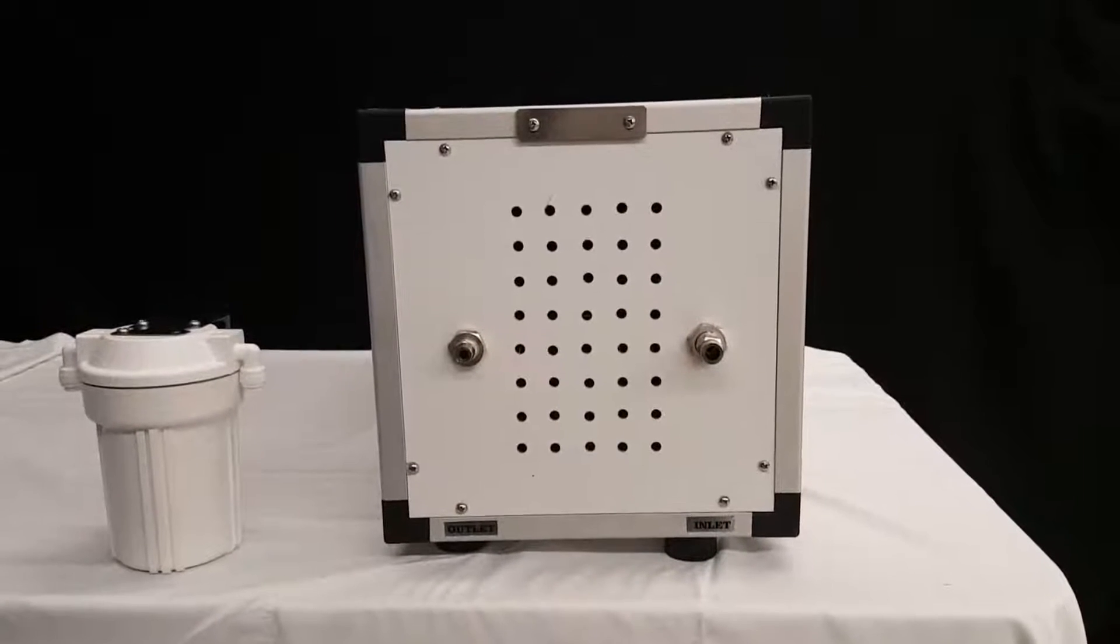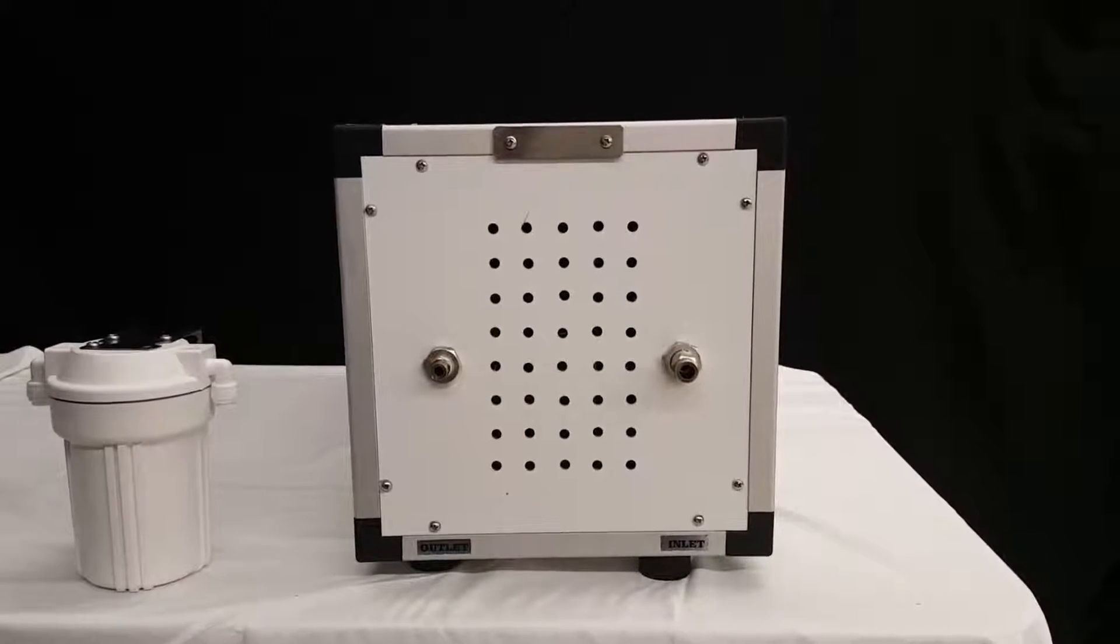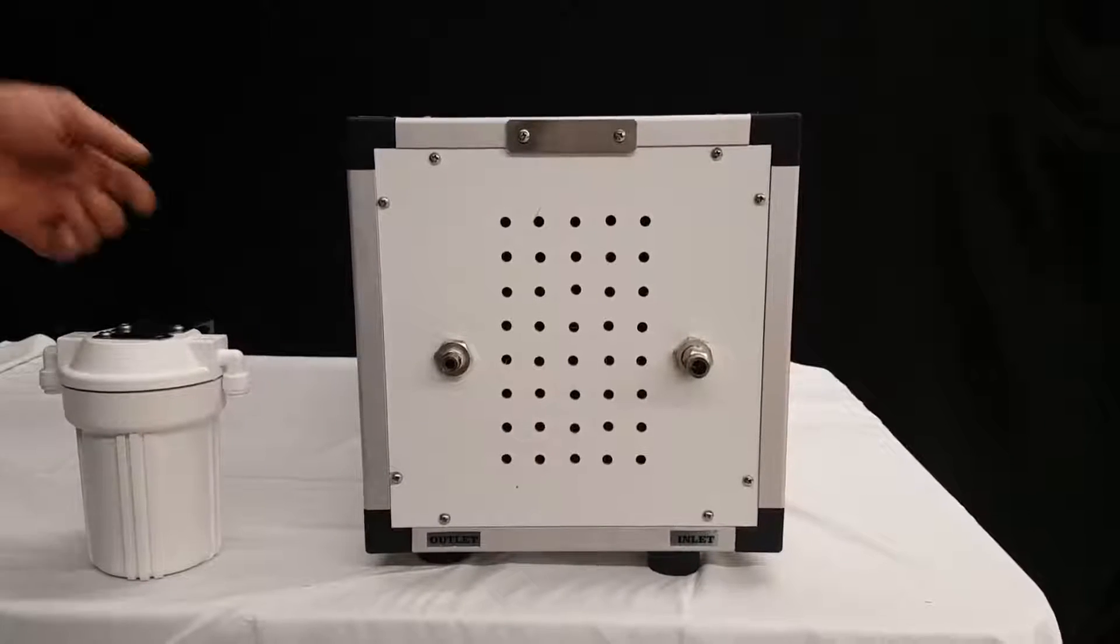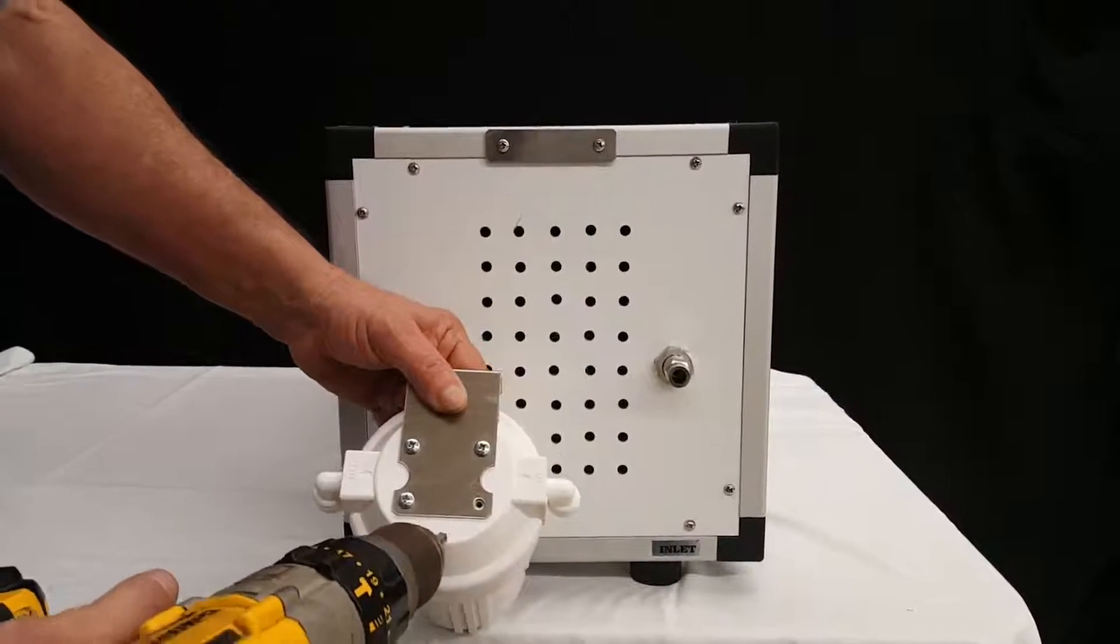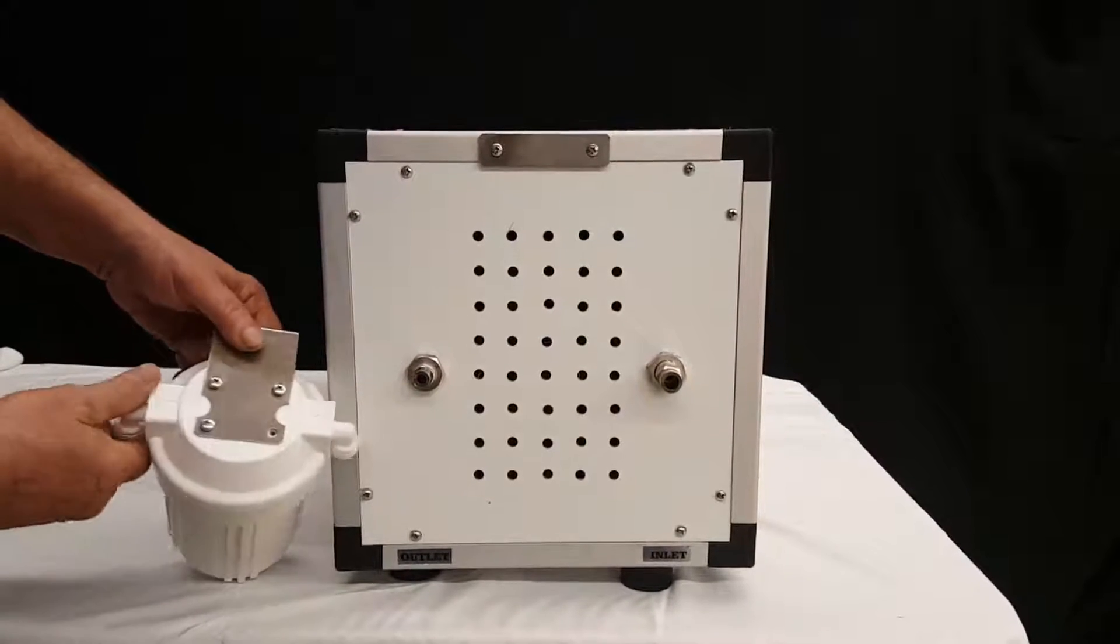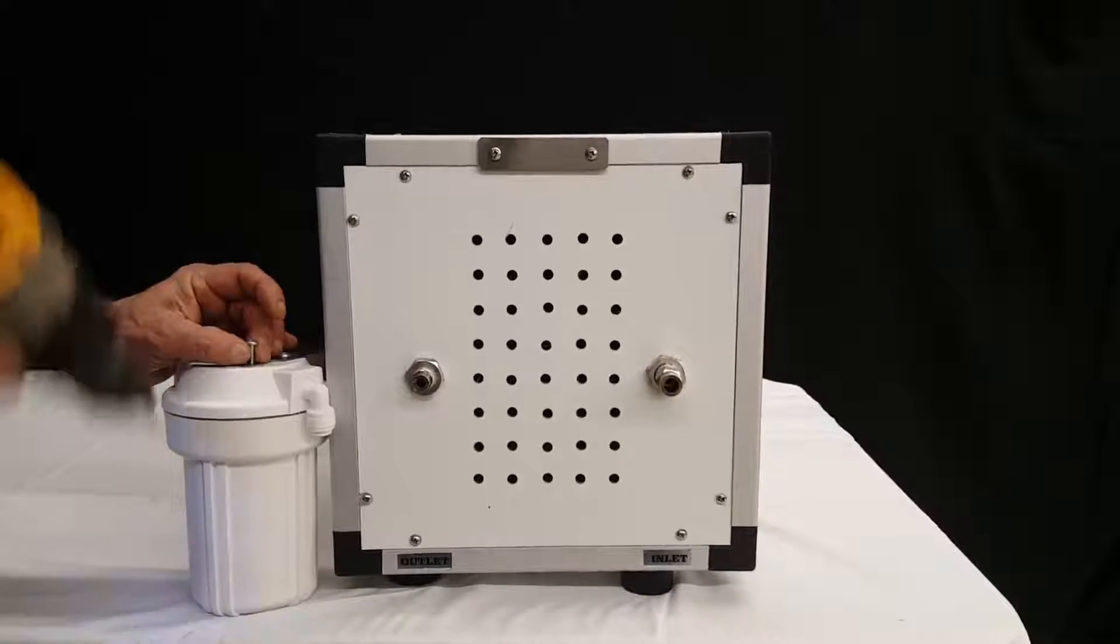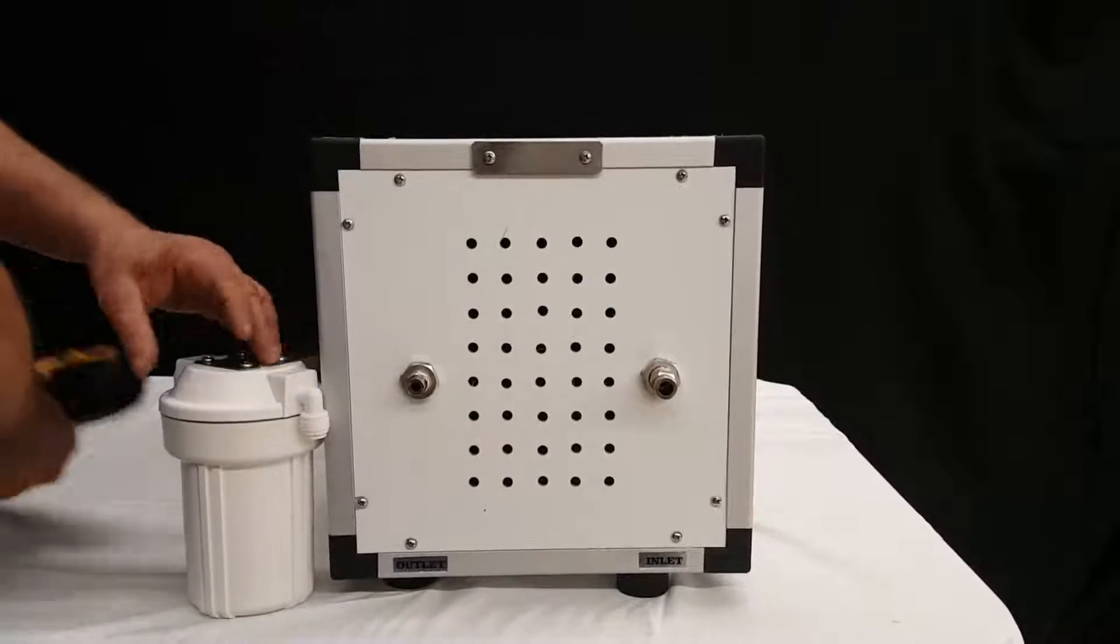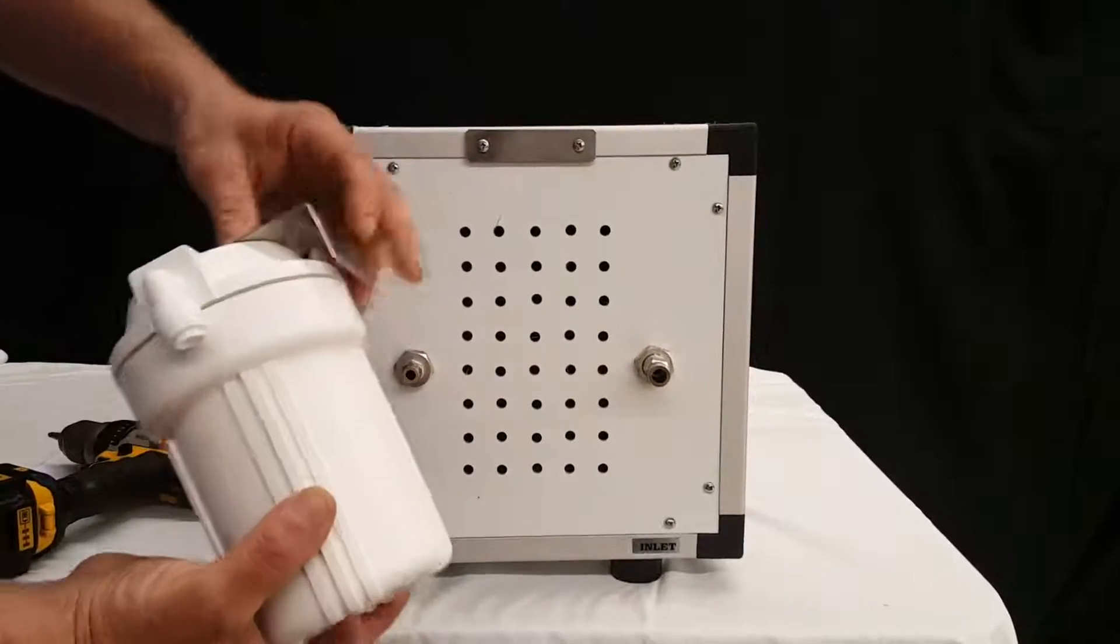This video shows you how to install the filters on the 1500 half gallon, one gallon, and two gallon units. Put your bracket on your filter inside to the right. You mount it with these screws to the top of it, all four screws. You hang it right here where it says filter bracket on the top.